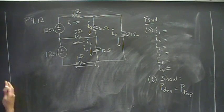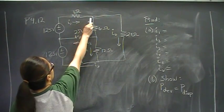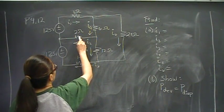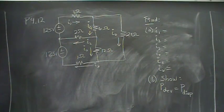This is problem 12 in chapter 4. We have a 125 volt source here, 1 ohm resistor here, 6 ohms, 2 ohms, 12, 1, 24, and another 125 volt.